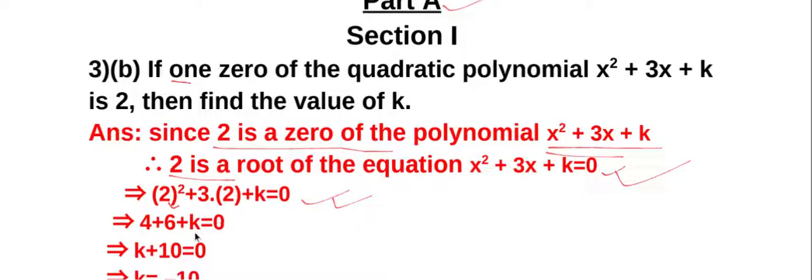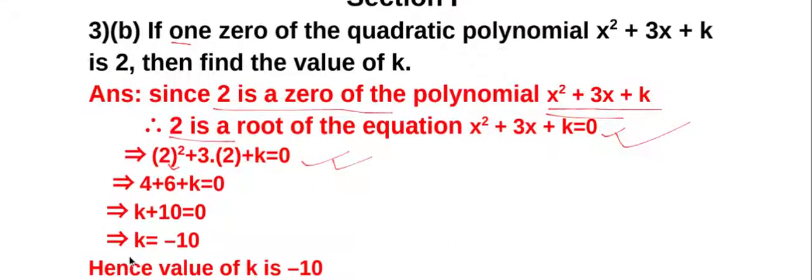So k + 10 = 0, which implies k = -10. Hence the value of k is -10. The answer is -10.